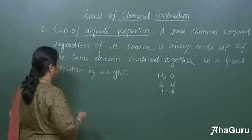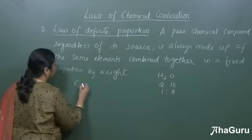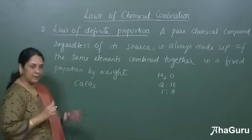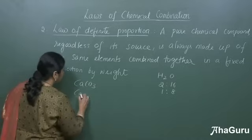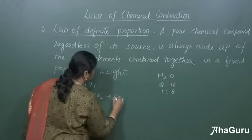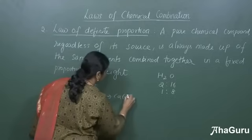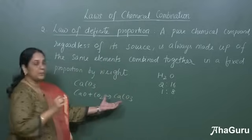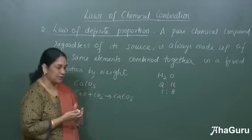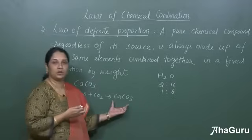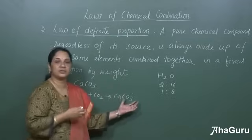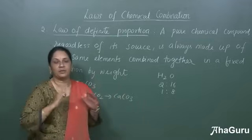Another example is calcium carbonate. If I prepare it in the lab, I react CaO plus CO₂ giving you calcium carbonate. Either I prepare this in the lab or get it naturally — the ratio of calcium to carbon and oxygen will always remain the same.